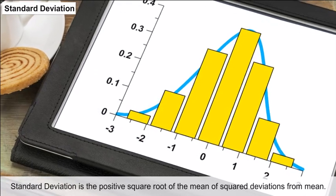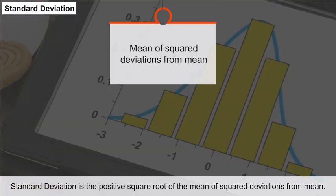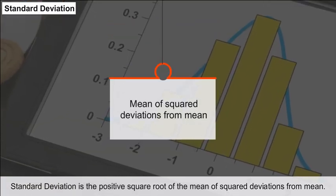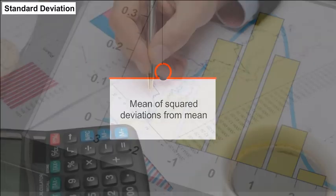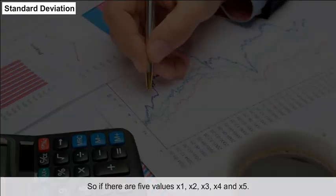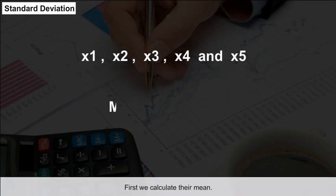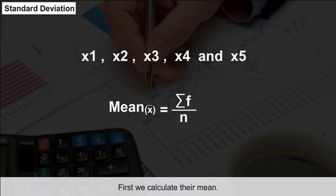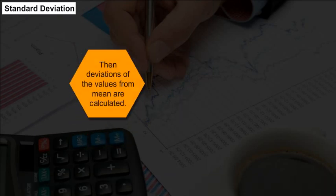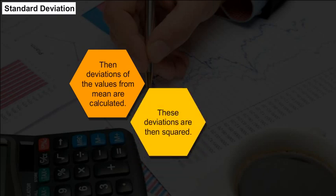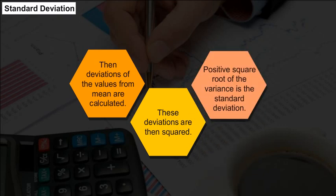Standard Deviation is the positive square root of the mean of squared deviations from the mean. If there are five values x1, x2, x3, x4, and x5, first calculate their mean, then calculate the deviations of each value from the mean, square those deviations, and the positive square root of the variance is the standard deviation.